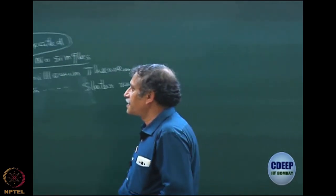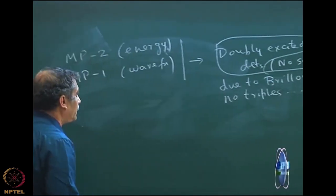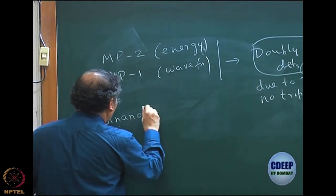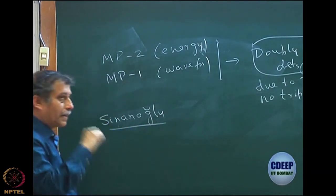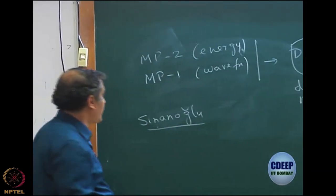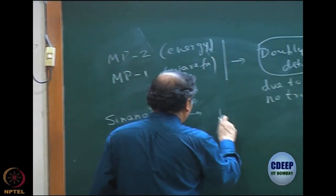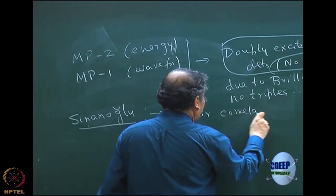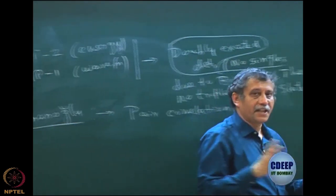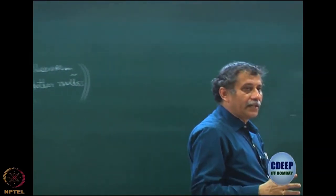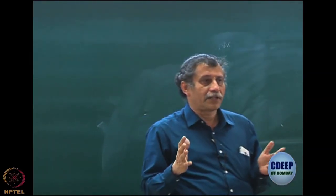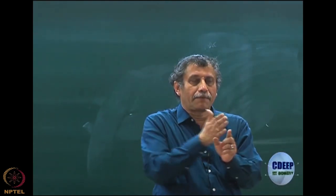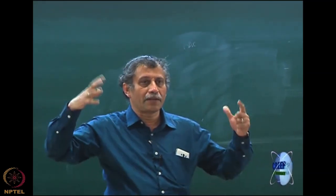Later, around the same time, this was expanded by Sinanoglu. That review I had already mentioned, but the very important highlight was that Sinanoglu described that correlation takes place mostly in pairs — what we call pair correlation theory. The simple physical insight is that for the exact wave function, no two electron coordinates can be identical, because if they are the same the wave function must go to zero since the Hamiltonian becomes singular.